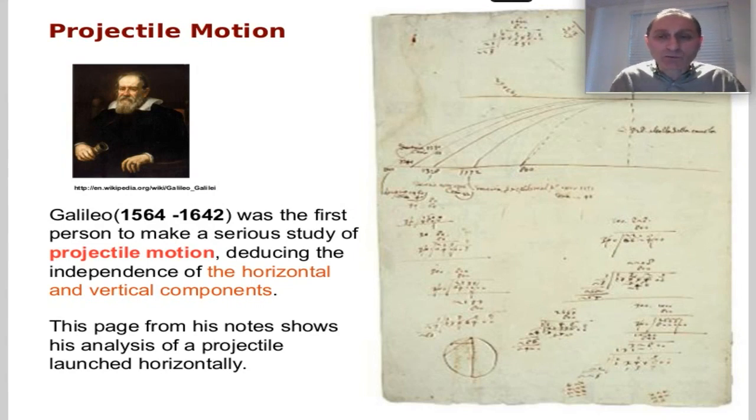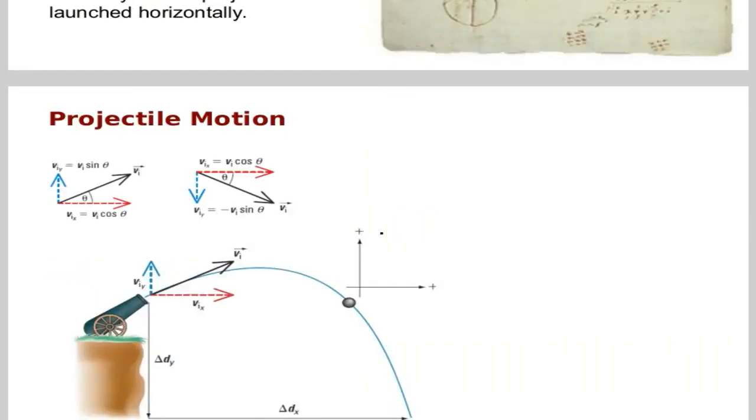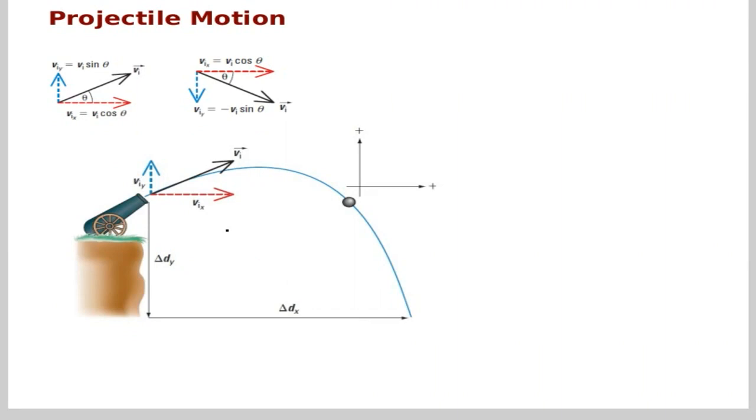Galileo divided this motion into two motions, horizontal and vertical motions. The page on the right shows his analysis of a projectile launched horizontally. Now let's divide a projectile like this into two components, a horizontal component and vertical component. Horizontal component is the cosine component, v-initial times cosine theta, and vertical component is v-initial times sine theta.